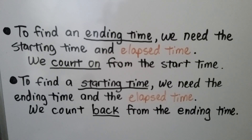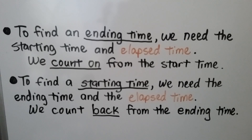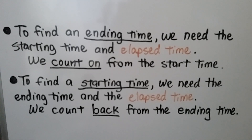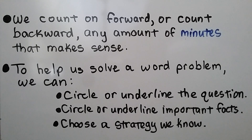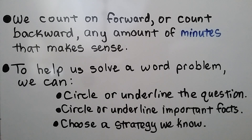To find an ending time, we need the starting time and elapsed time — we count on from the start time. To find a starting time, we need the ending time and the elapsed time — we count back from the ending time. We can count forward or backward any amount of minutes that makes sense. To help us solve a word problem, we can circle or underline the question, circle or underline important facts, and choose a strategy we know.